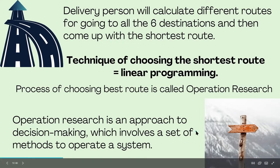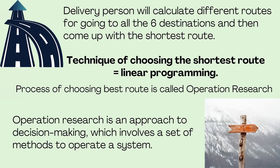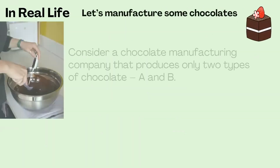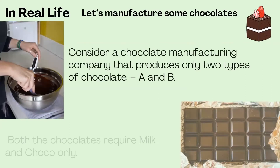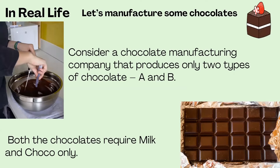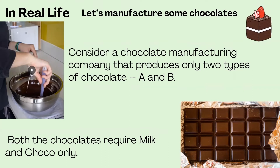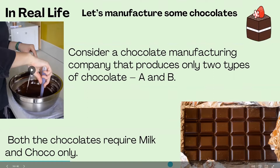Now I'll give you another example — manufacturing chocolates. We have a chocolate manufacturing company that produces two types of chocolates, A and B. Both chocolates require two ingredients: milk and choco.